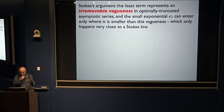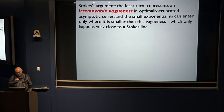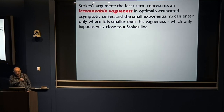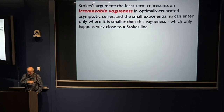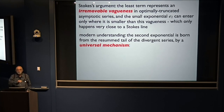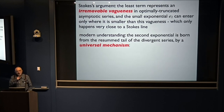Stokes' argument was this: the best you can do with one of these divergent series is to go to the least term and then stop. He argued that this is an irremovable vagueness in these truncated series, and the small exponential can enter only where it's smaller than this vagueness. He did a calculation to show this happens near what we now call Stokes lines. But we now understand things differently: the second exponential is born from the resummed divergent tail of the large exponential by a universal mechanism.